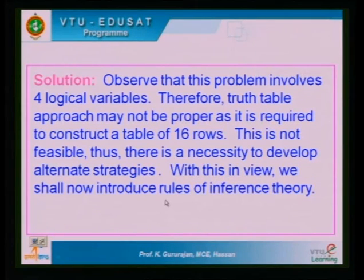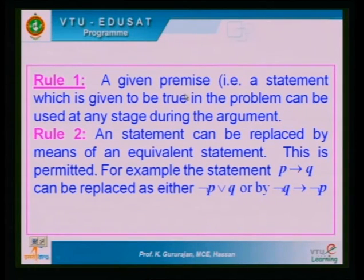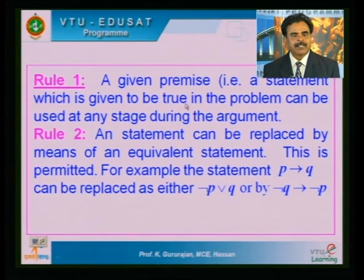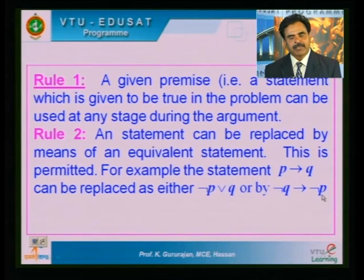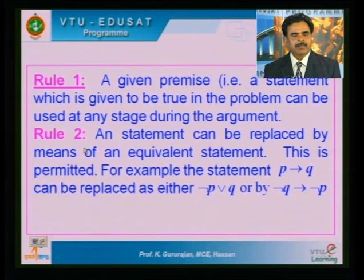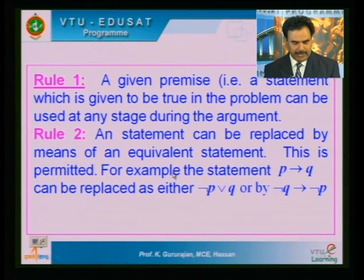The rules of inference: Rule 1 — a given premise can be used at any stage during the argument since it is always true. Rule 2 — a statement can be replaced by a logically equivalent one; for example, P→Q can be replaced by ¬P OR Q or by its contrapositive ¬Q→¬P. Rule 3 — in a conditional proof, if the problem is to show A→B, you may introduce A as an additional premise.